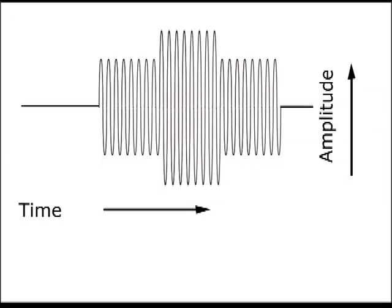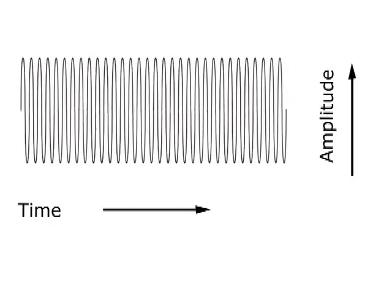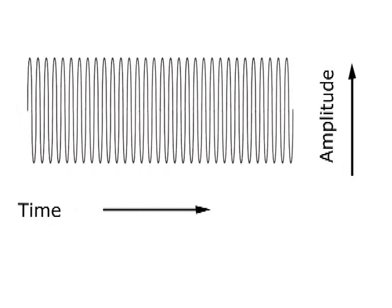The station gear modulated that signal both in amplitude, which determined the intensity of the color being displayed, and in phase, to determine the hue: red, green, blue, yellow, etc.